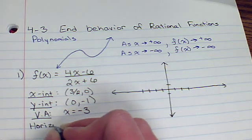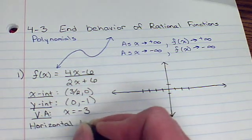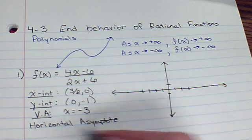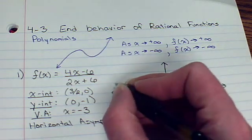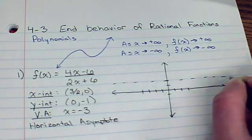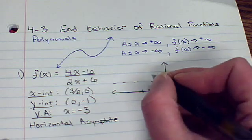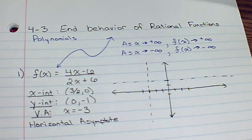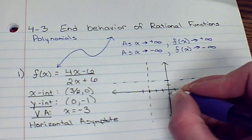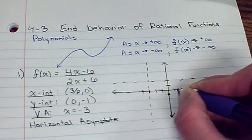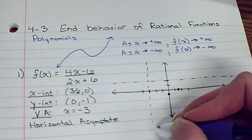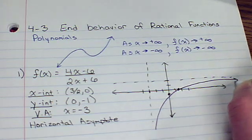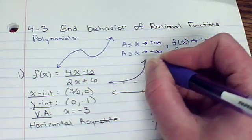We have a horizontal asymptote. Now, knowing that, that makes it even easier to graph. At 2, we had a horizontal one. We have a vertical one at negative 3. My y-intercept was negative 1 and x-intercept is 1 and a half. So we can already tell what it's going to do. It's going to come up. Now, remember, asymptotes, they get really close to, but never touch.